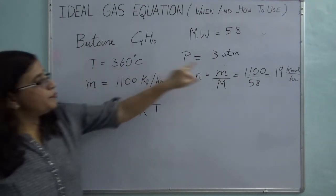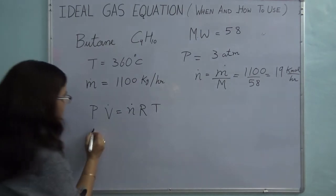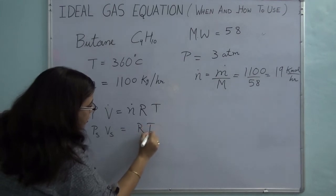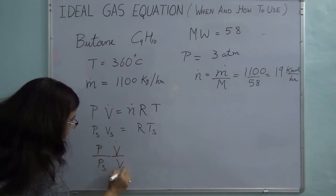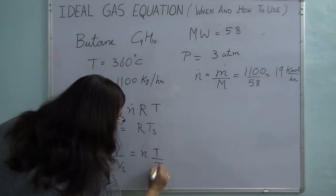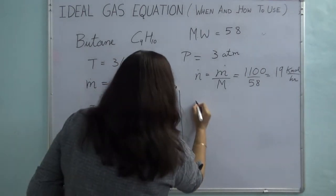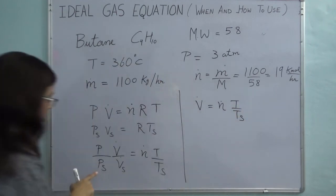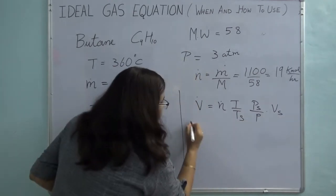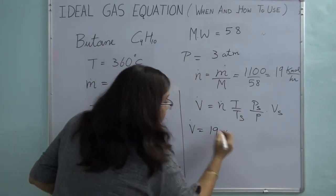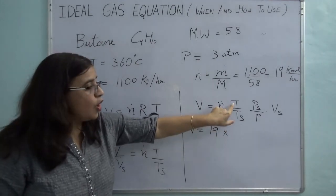Instead of finding the R value, I make use of the STP condition: P_S × V_S = R × T_S. Dividing the flow-rate equation by this: (P × V-dot) / (P_S × V_S) = n-dot × T / T_S. Solving for V-dot: V-dot = n-dot × (T/T_S) × (P_S/P) × V_S.